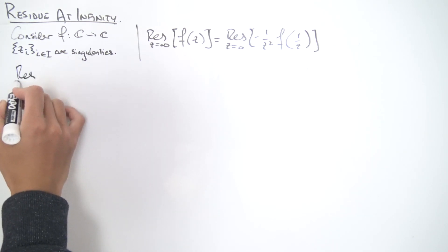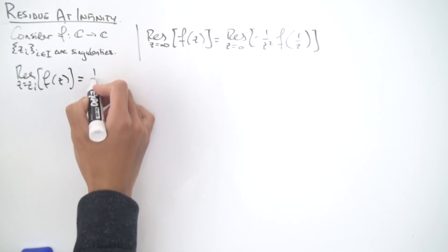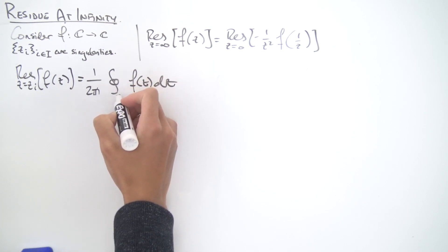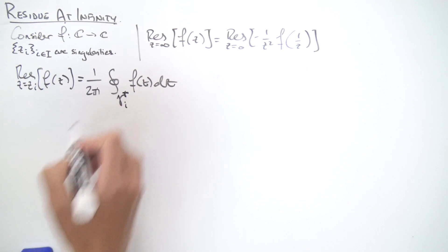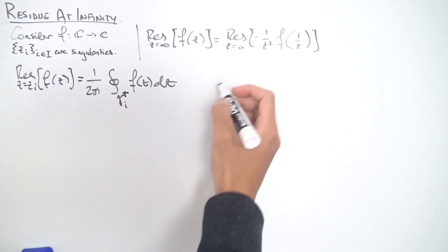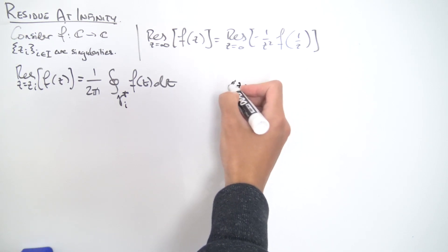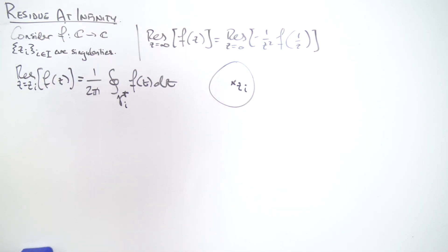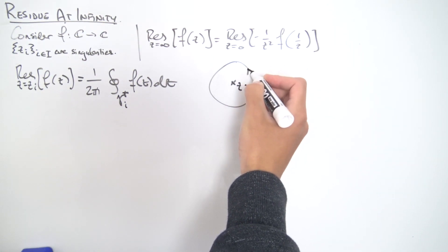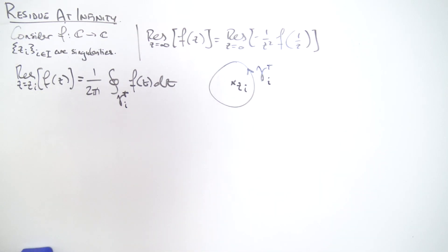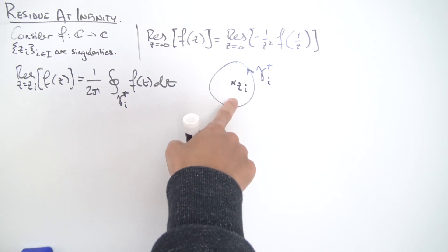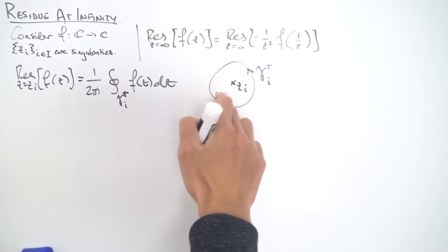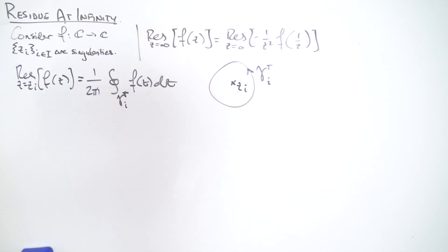The residue at z equals z_i of our function f(z) is equal to one over two pi i times the contour integral of f(z) dz over some contour gamma_i traversed in the positive direction. Imagine you have some singularity z_i marked with an x, and we construct a circular contour traversed in the positive direction. An important note: this contour must be sufficiently small so that only the singularity z_i is enclosed — we don't want other singularities inside.